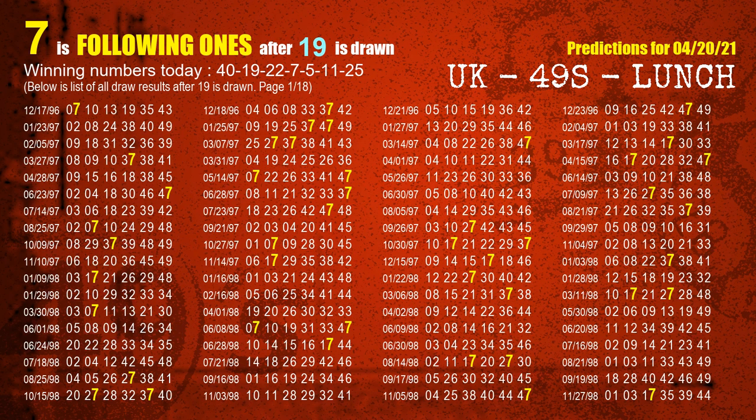The second winning number is 19. The most frequently following units digit is 7 when 19 is the winning number in the last draw.